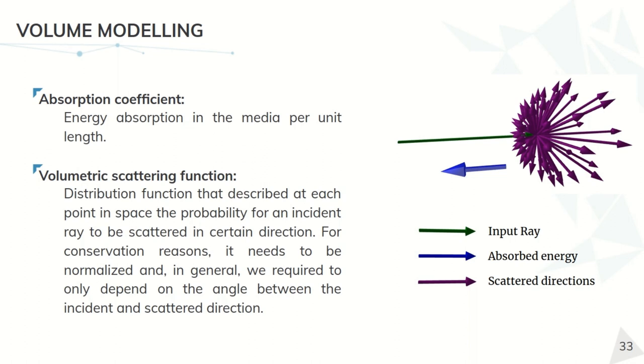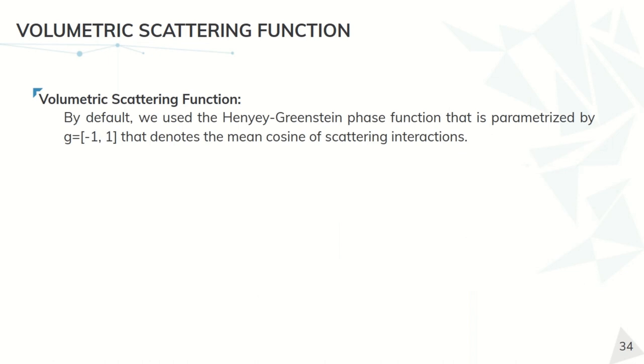The most important object is going to be the volumetric scattering function, that is a distribution function that describes at each point of space the probability of being scattered in another direction. As we can see here, if we enter, this gray ray is the input ray, and at some point can scatter in all the purple line directions.